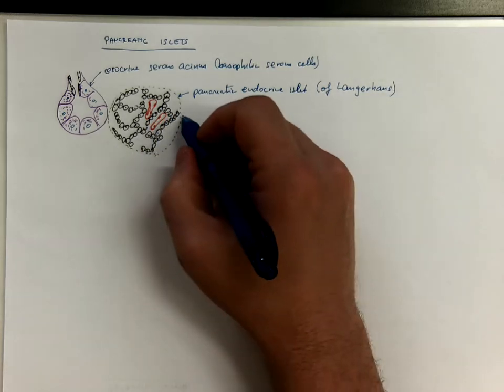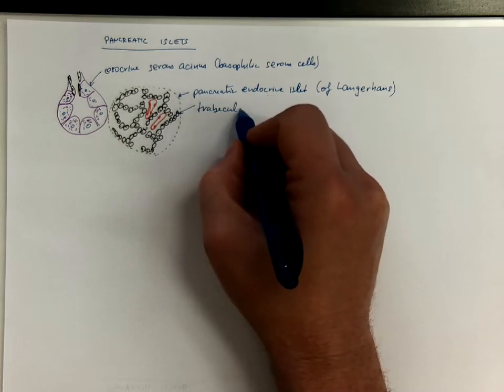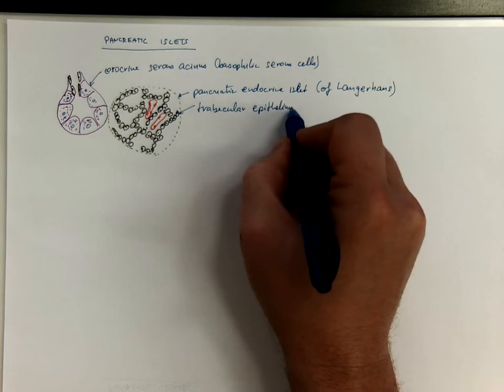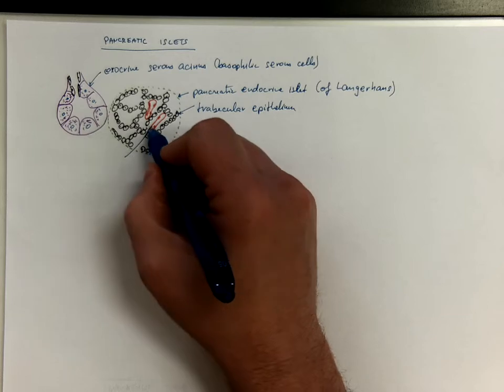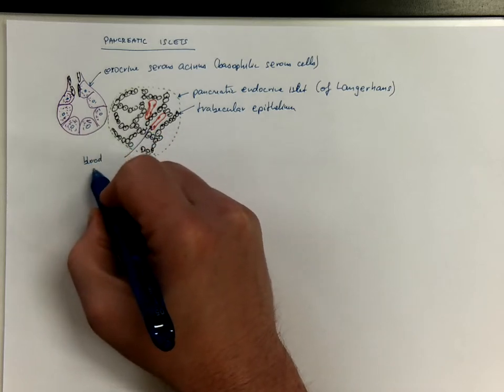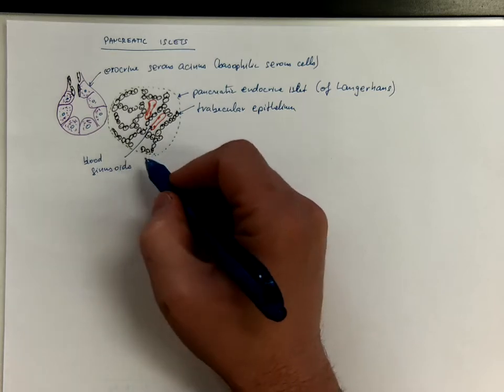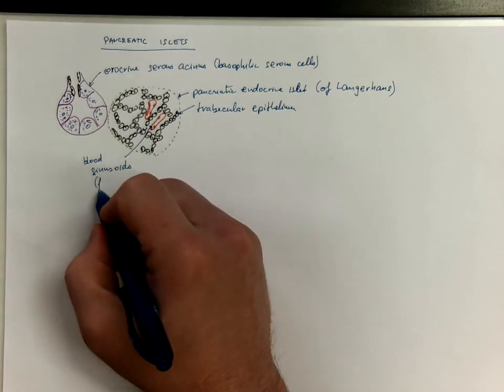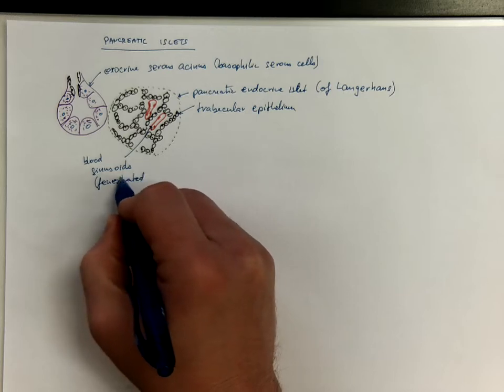They are made of trabecular epithelium. There are blood sinusoids among the trabecules, fenestrated capillaries.